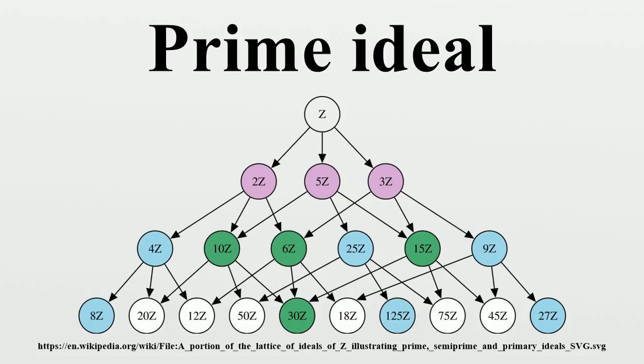This generalizes the following property of prime numbers. If P is a prime number and if P divides a product AB of two integers, then P divides A or P divides B. We can therefore say a positive integer N is a prime number if and only if the ideal NZ is a prime ideal in Z.